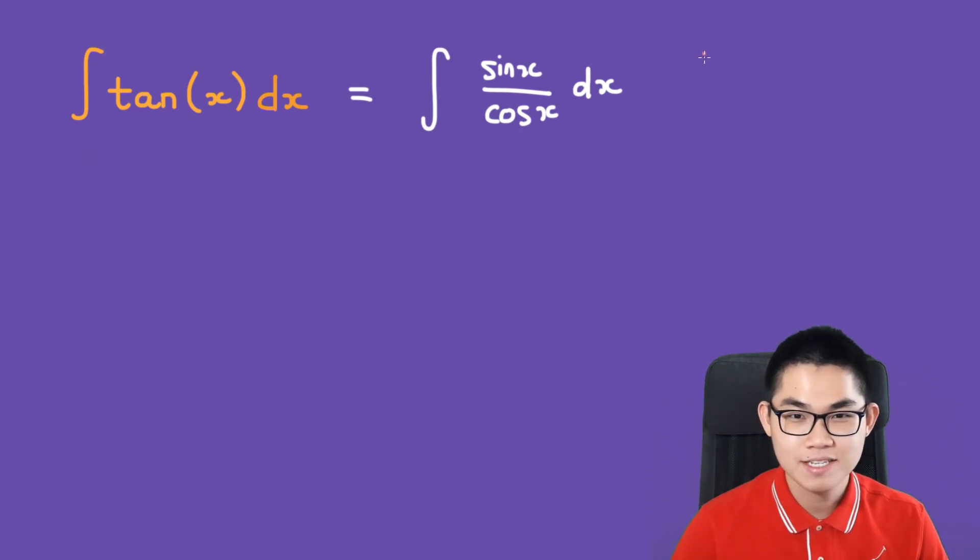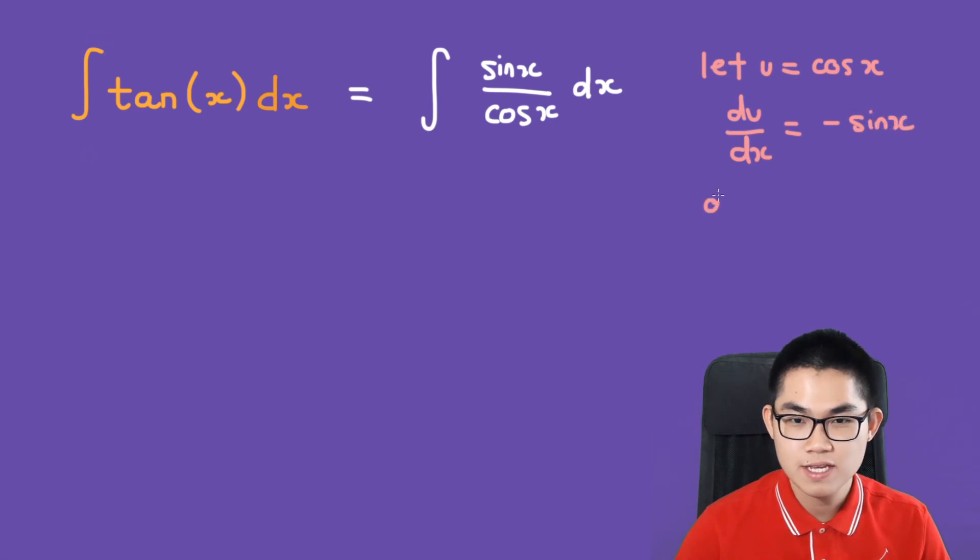Then the second step is to let u equal cosine of x. The reason why I do this is because I want to cancel out the sine of x, which you will see. So du over dx, we differentiate it. This will give us negative sine of x. So du equals negative sine of x dx, and dx is 1 over negative sine of x du.